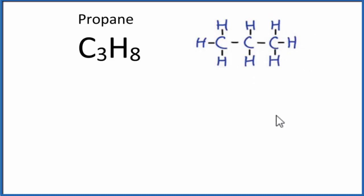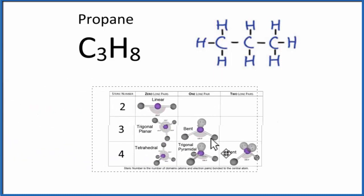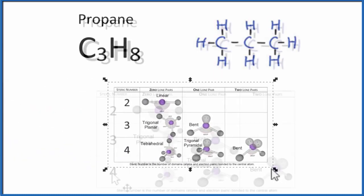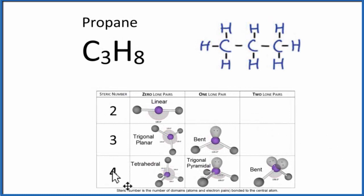That gives it a steric number of four and we can use this table here to help figure out the molecular geometry. So a steric number of four and we don't have any lone pairs, all the electrons are involved in chemical bonds, that gives us a tetrahedral molecular geometry.